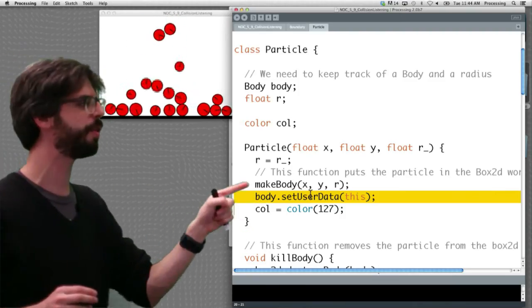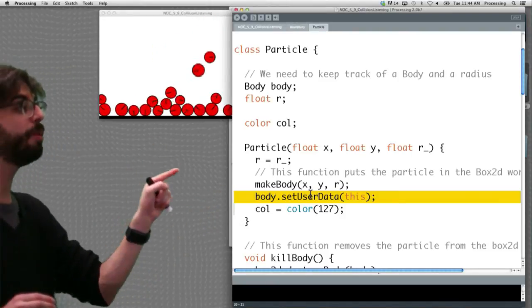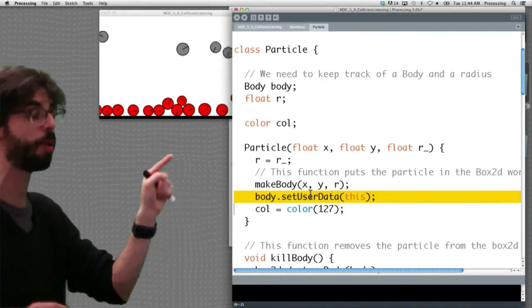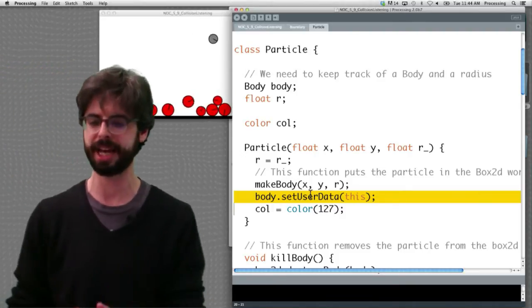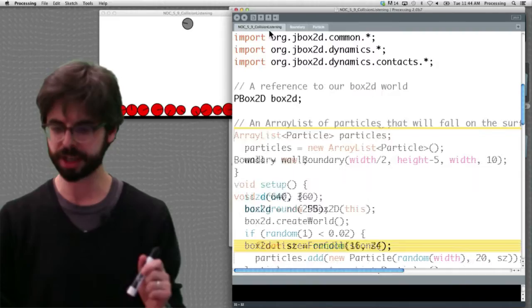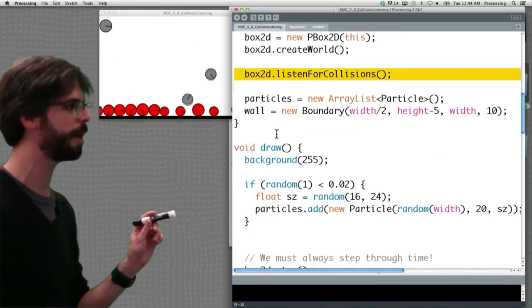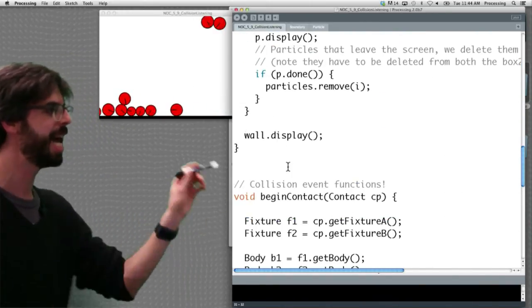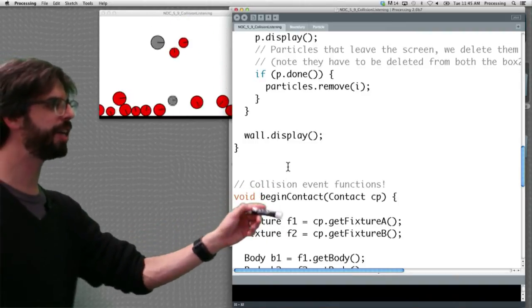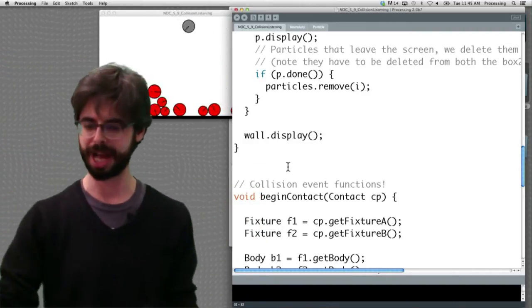So step one, you can see, as I'm already showing you here, is that when we make the line of code that we're adding to our particle, our box class, is to always set that body's user data. And now let's go back to the collision listening, the main program, right? We've written a function down here in the bottom called beginContact. And here's that first step. Step one, which fixtures collided? Which fixtures collided?